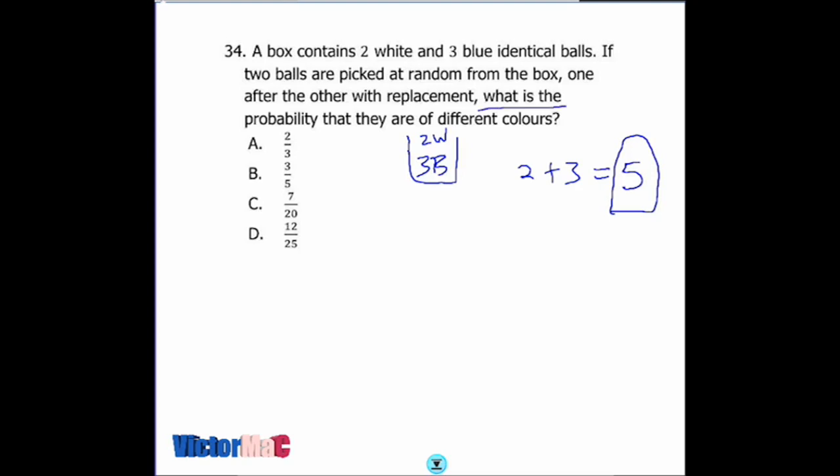What is the probability that they are of different colors? That means my first is blue and second is white, or the first is white and second is blue. We have two possibilities, either this or this, so 'or' is used, which changes to addition.